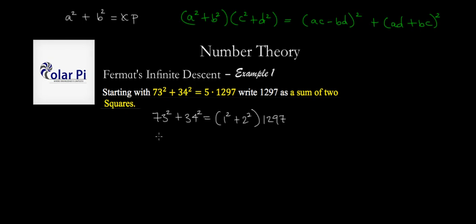Next we can multiply both sides of this equation by 5. So when we do that on the left hand side we'll have 73 squared plus 34 squared times 5, so times 1 squared plus 2 squared.